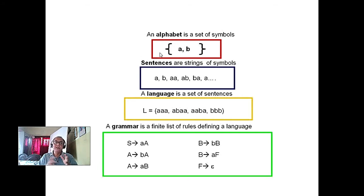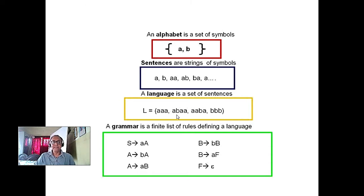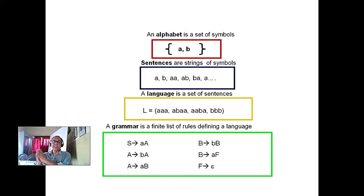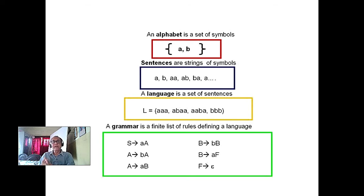Sigma star means any combination of symbols from the alphabet. When it is a meaningful combination we call it a sentence. A sentence can be formed by some grammar, so a sentence is a subset of sigma star. The rules of the grammar define what sentences are valid. Regular grammar, finite state machine, non-deterministic finite state machine, and regular expressions are all equivalent to each other — one to one. Every finite state machine corresponds to exactly one regular language, and that language has only one regular grammar.